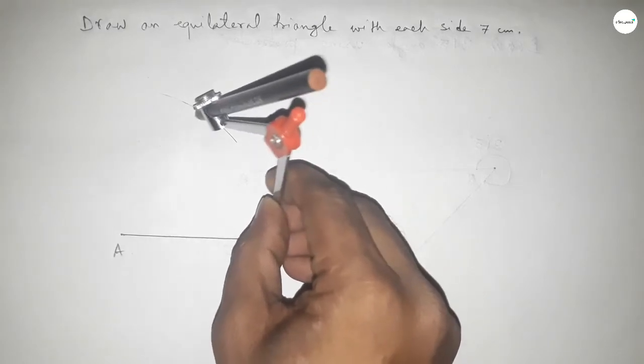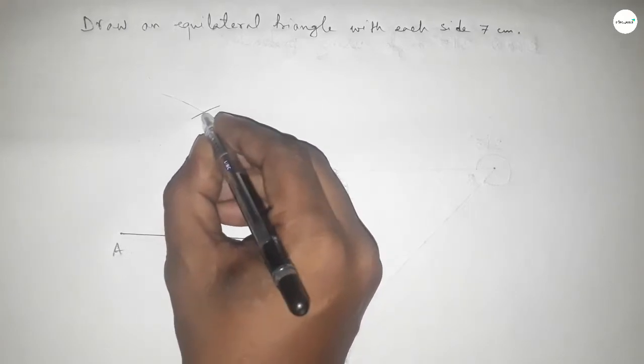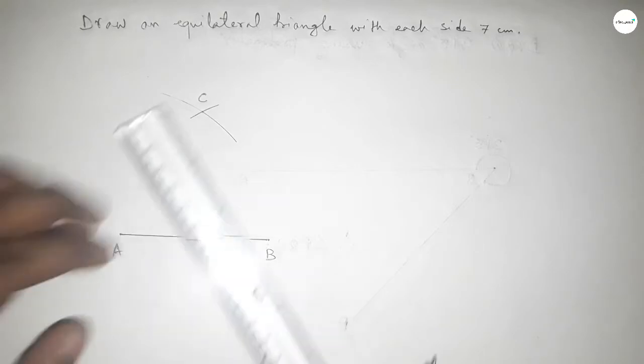So both the curves intersect at a point and this is C point.